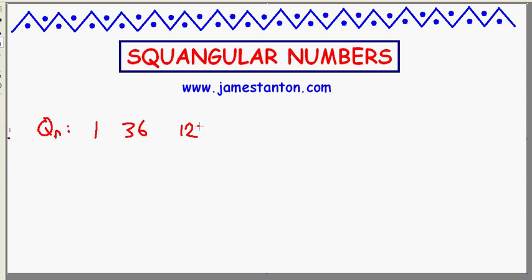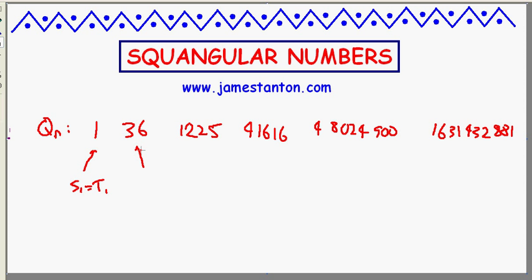So it goes: 1, 36, 1225, 41,616, 48,024,900. The next one turns out to be huge: 1 billion 631 million 432 thousand 881. This is the first square number equaling the first triangle number. This is the sixth square number equaling the eighth triangle number. This one turns out to be the 35th square number equaling the 49th triangle number. This one turns out to be the 204th square number equaling the 288th triangle number, and so on.